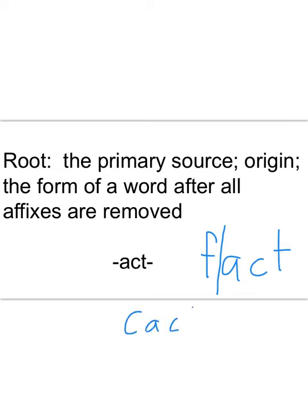We could say the same thing about the word 'cactus' — it includes A-C-T, but the letter C by itself has no meaning, and '-us' is not a suffix, so 'cactus' is its own word. In order for a word to be a complex word, each part — the prefix at the beginning or the suffix at the end — has to have a unique meaning.